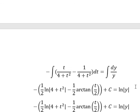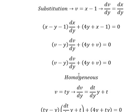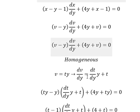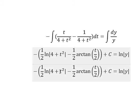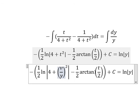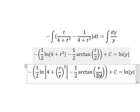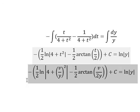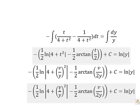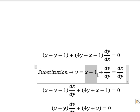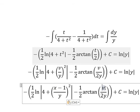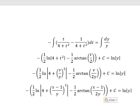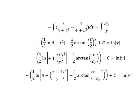Now we substitute back: t is v over y, and v equals s minus one. This gives us the final answer. Thank you for watching.